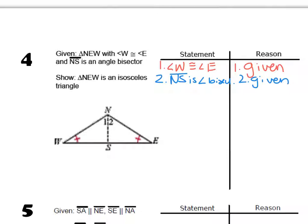If NS is an angle bisector, that means angle 1 and angle 2 have to be congruent. Because NS is an angle bisector, or you can say definition of angle bisector, either way is fine with me.